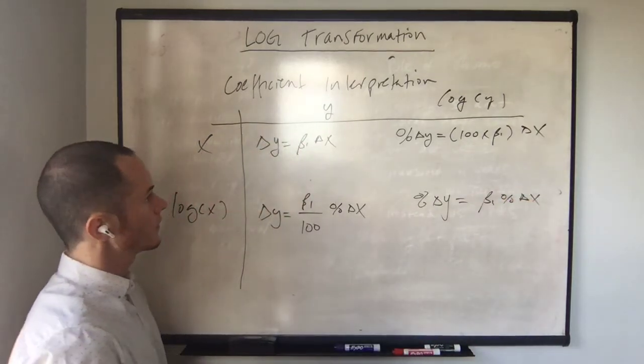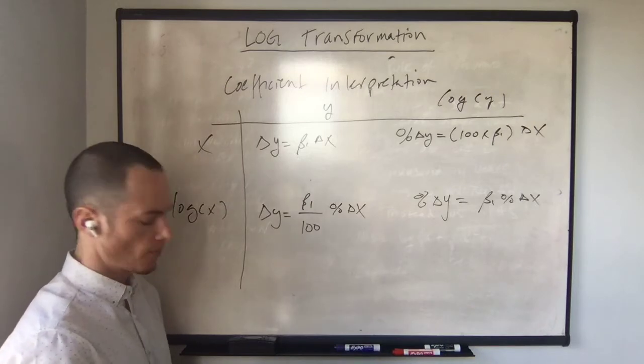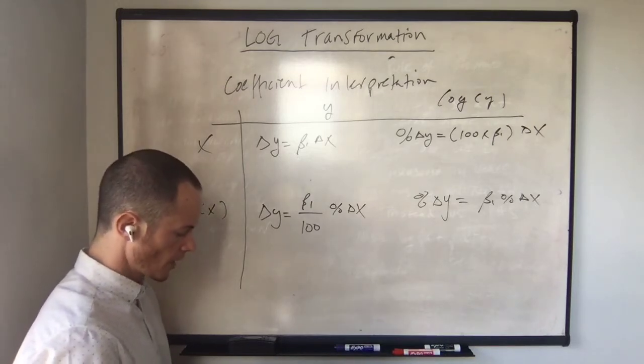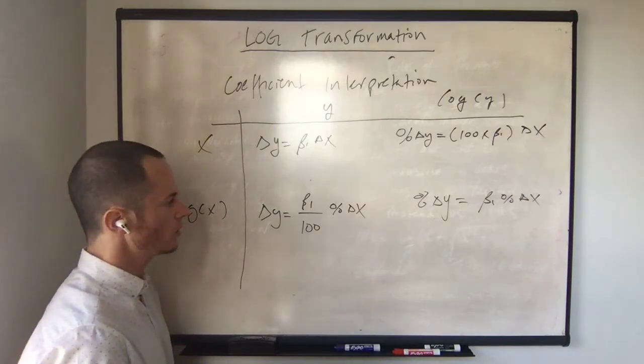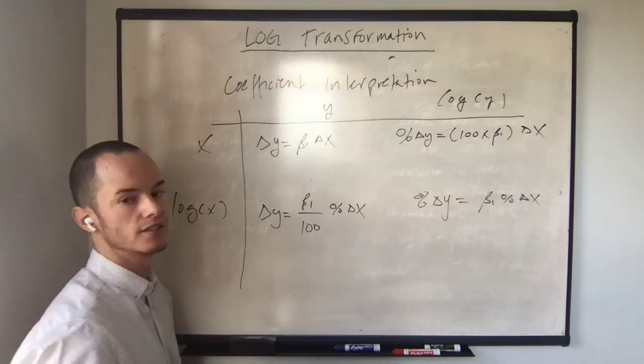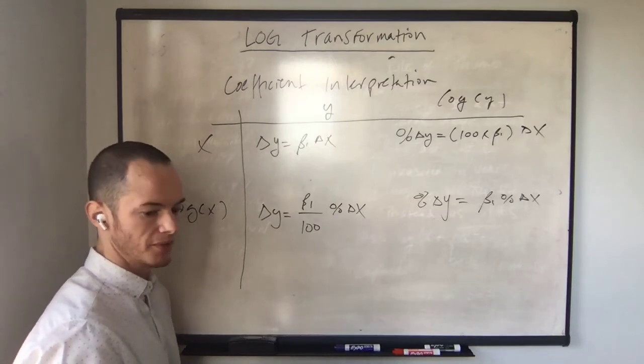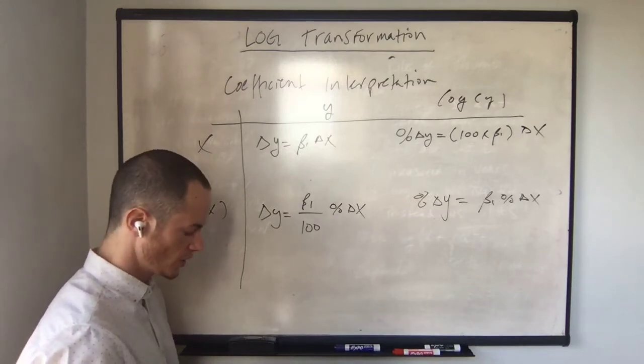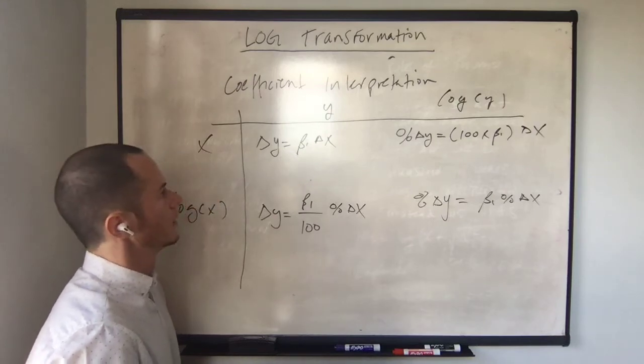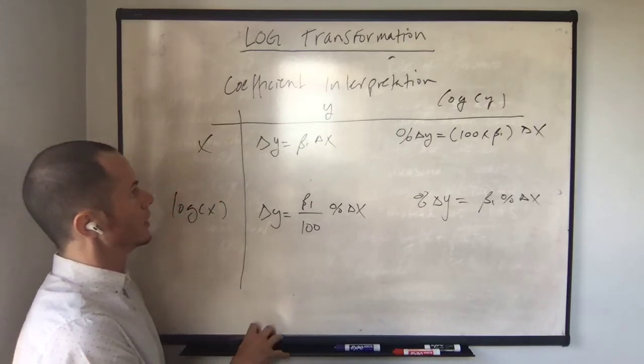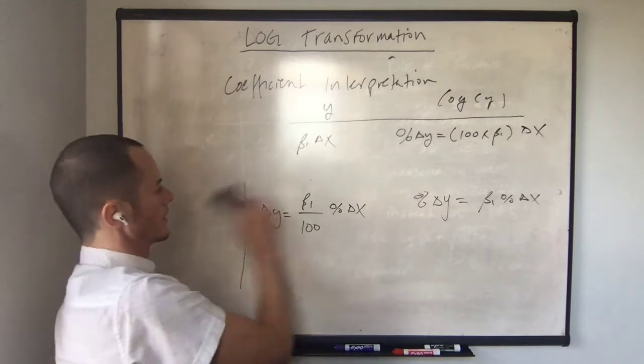Now, these interpretations are just approximations and they work well when the change in x is small. But they stop working so well when the change in x becomes larger. So we can get better coefficient interpretations than this.